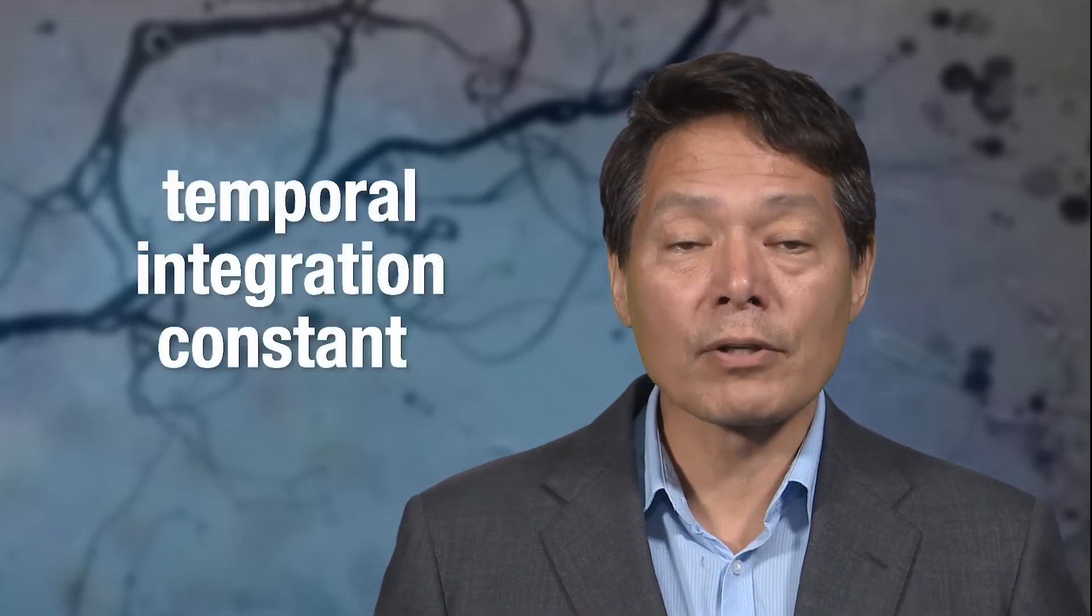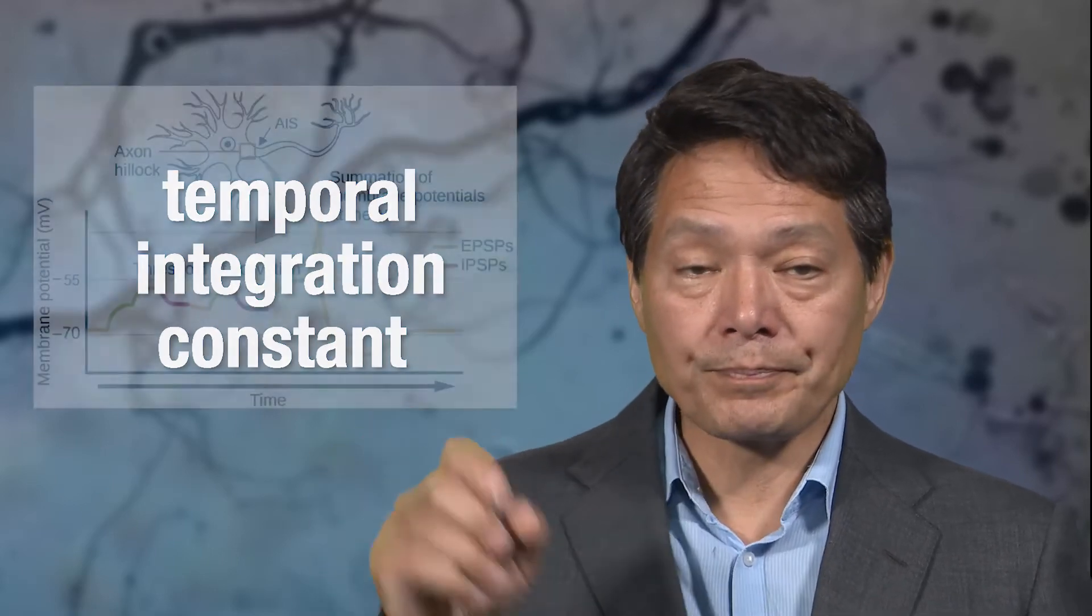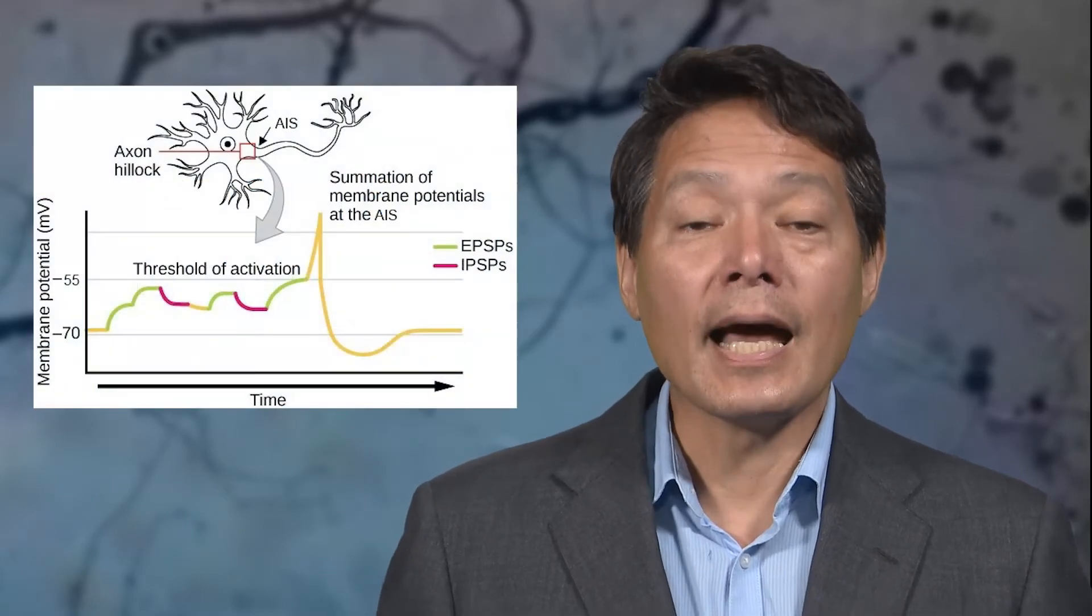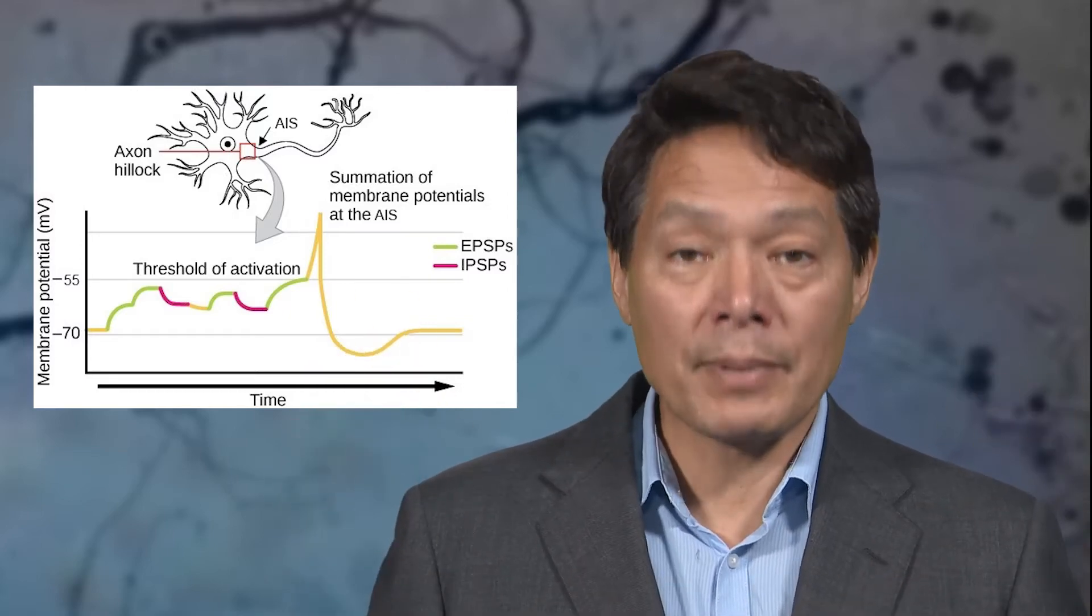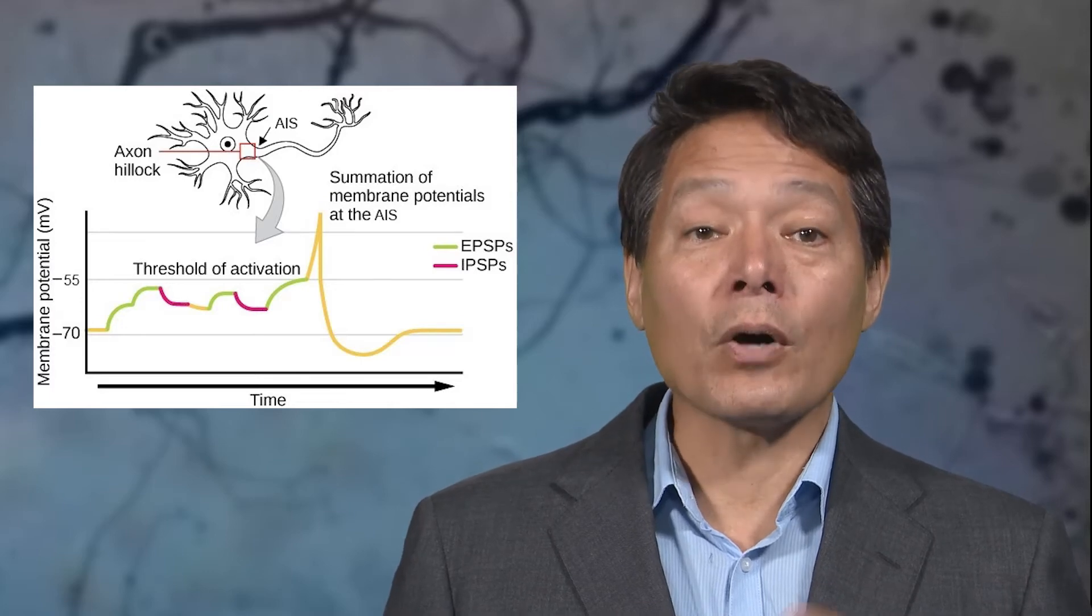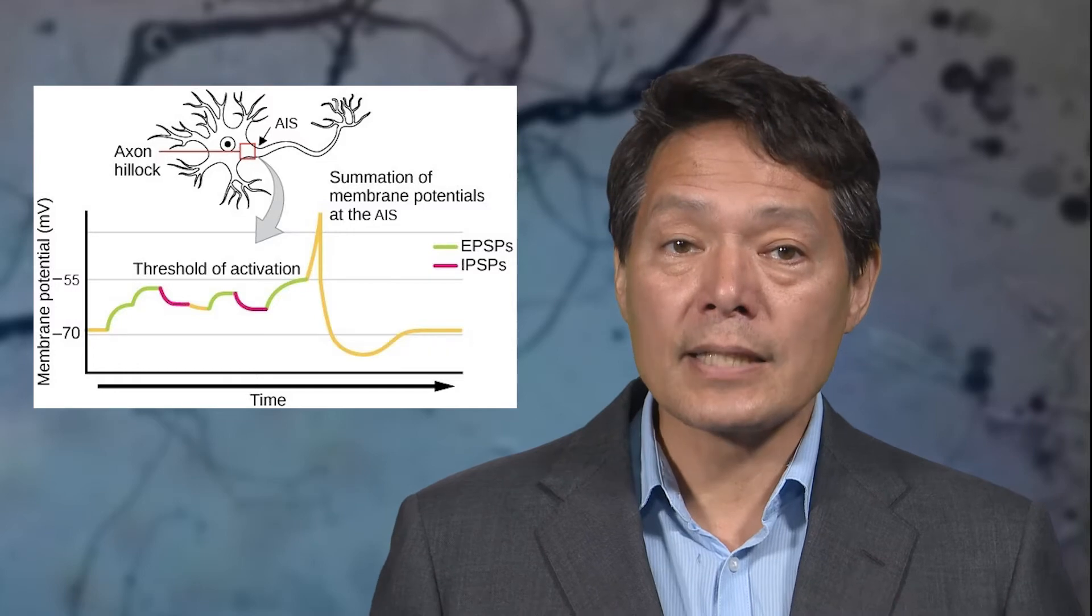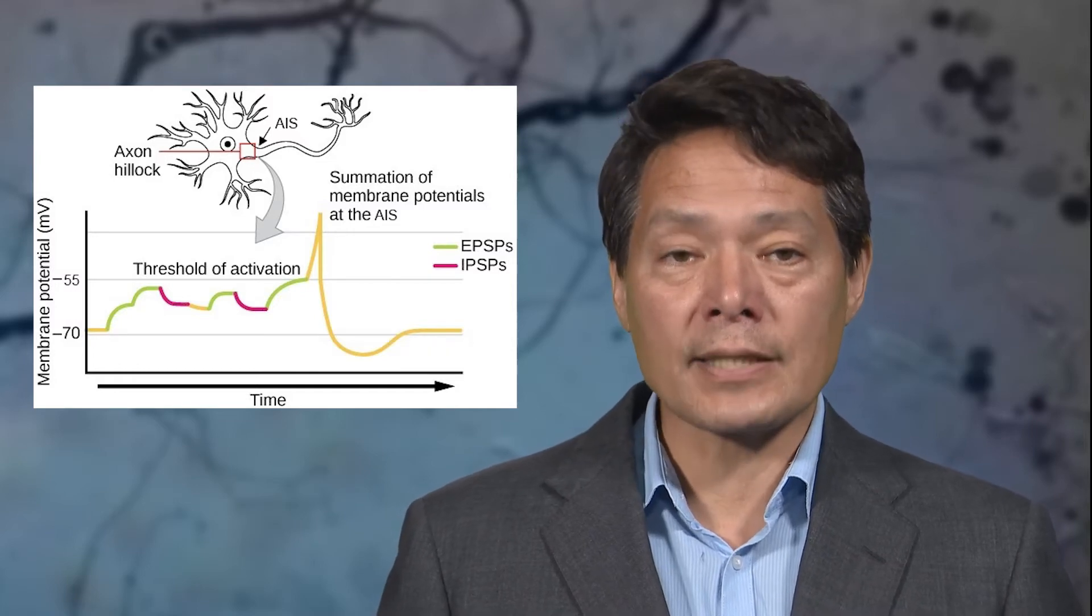However, if enough EPSPs happen, all within a relatively brief time known as the temporal integration constant of the neuron, then the EPSPs can sum up. So a neuron functions as a leaky integrator. It sums up EPSPs, but they decay away. So the EPSPs have to all arrive within a very short time window in order to add up. Otherwise, they would decay back to the baseline resting potential.